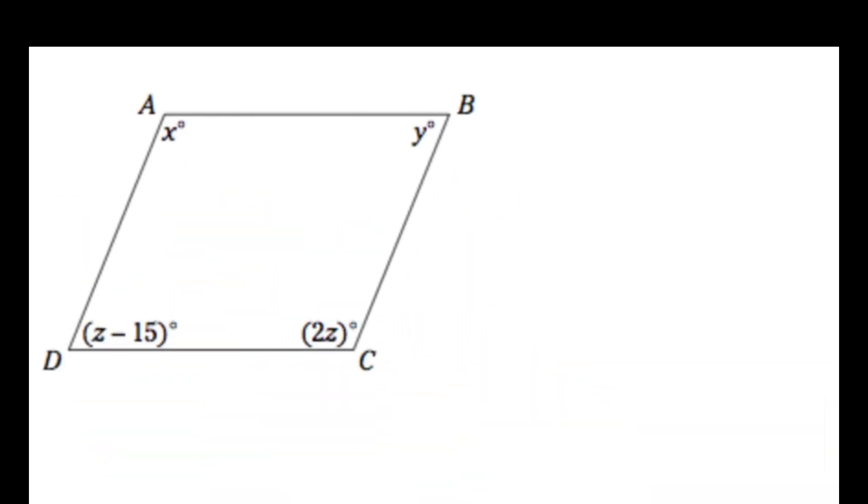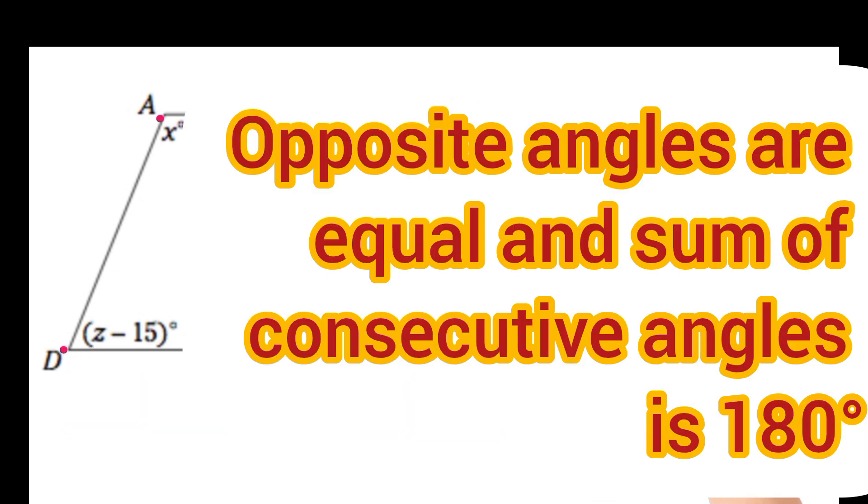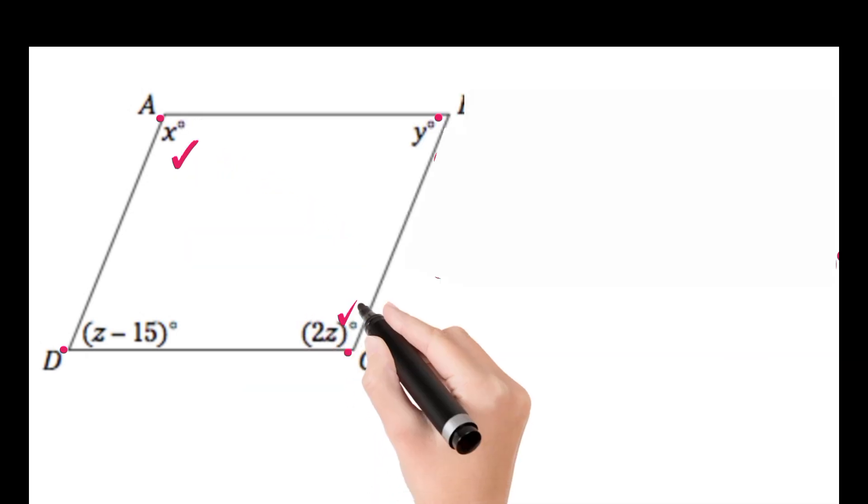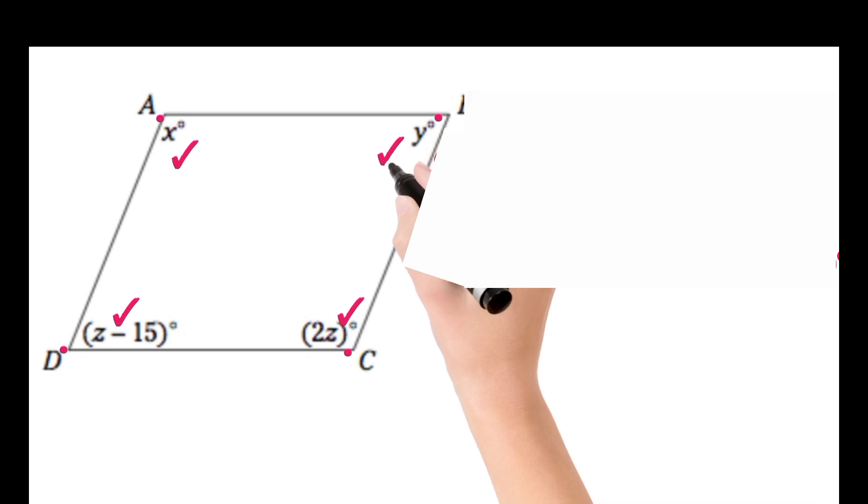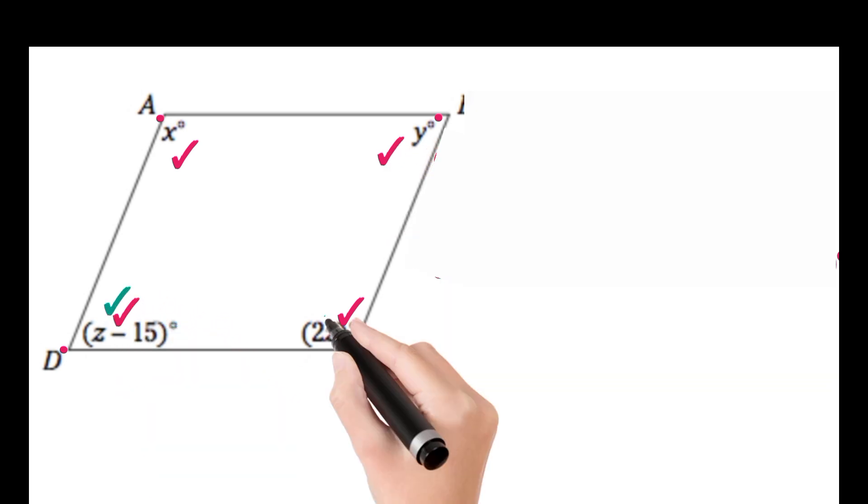This is the given figure and it is given that ABCD is a parallelogram. We know that in the parallelogram, opposite angles are equal and the sum of consecutive angles is 180 degrees. This angle will be equal to this angle because both are opposite, and this angle plus this angle will be equal to 180 degrees because both are adjacent.